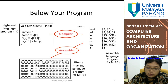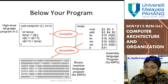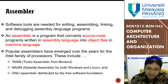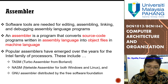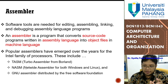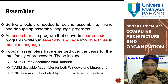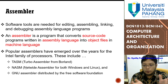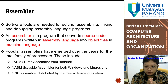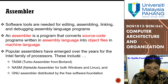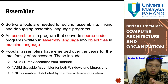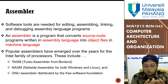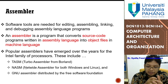Basically, an assembler is a software tool needed for editing, assembling, linking, and debugging the assembly language program. It converts the source code program written in assembly language into object files in machine language. Popular assemblers have emerged over the years for the Intel family of processors, including TurboAssembler, NetworkAssembler, and a new assembler distributed by the Free Software Foundation. If you are familiar with open source programs, you can look for a GNU assembler available to download for your Linux-based machine.